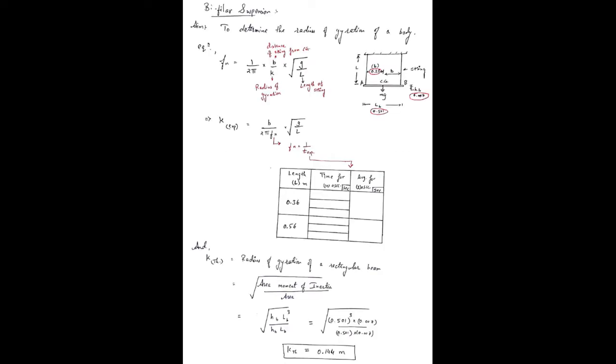Bifillar Suspension. The aim of this experiment is to determine the radius of gyration of a body. Assume that a beam of some mass is suspended by two strings tied at the extremities such that the beam remains perfectly horizontal.